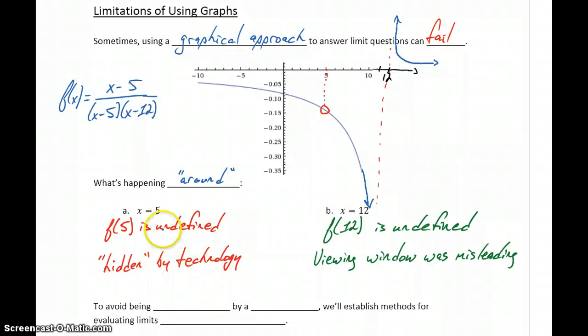So graphs can mislead us because we might not see these open circles or undefined points. Or if our window is incorrect or our domain for the graph is incorrect, we may not see important characteristics.